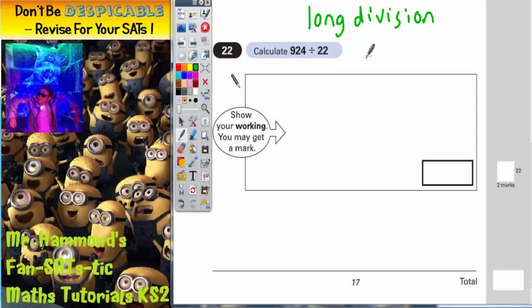And the best method for doing this is the chunking method. Now the chunking method is all about repeated subtraction. So what we're going to do is subtract chunks of 22 from 924 until we've got nothing left. And when we've got nothing left, we're going to count up all of our chunks.